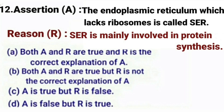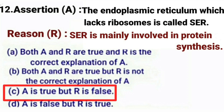Next question. Assertion: The endoplasmic reticulum which lacks ribosomes is called smooth endoplasmic reticulum. Reason: Smooth endoplasmic reticulum is mainly involved in protein synthesis. The assertion is true — smooth ER lacks ribosomes. However, the reason is false: smooth endoplasmic reticulum is mainly involved in synthesizing lipids, not proteins. The main function of ribosomes is protein synthesis — and since smooth ER lacks ribosomes, it does not perform protein synthesis. So the correct answer is option C: assertion is true, but reason is false.